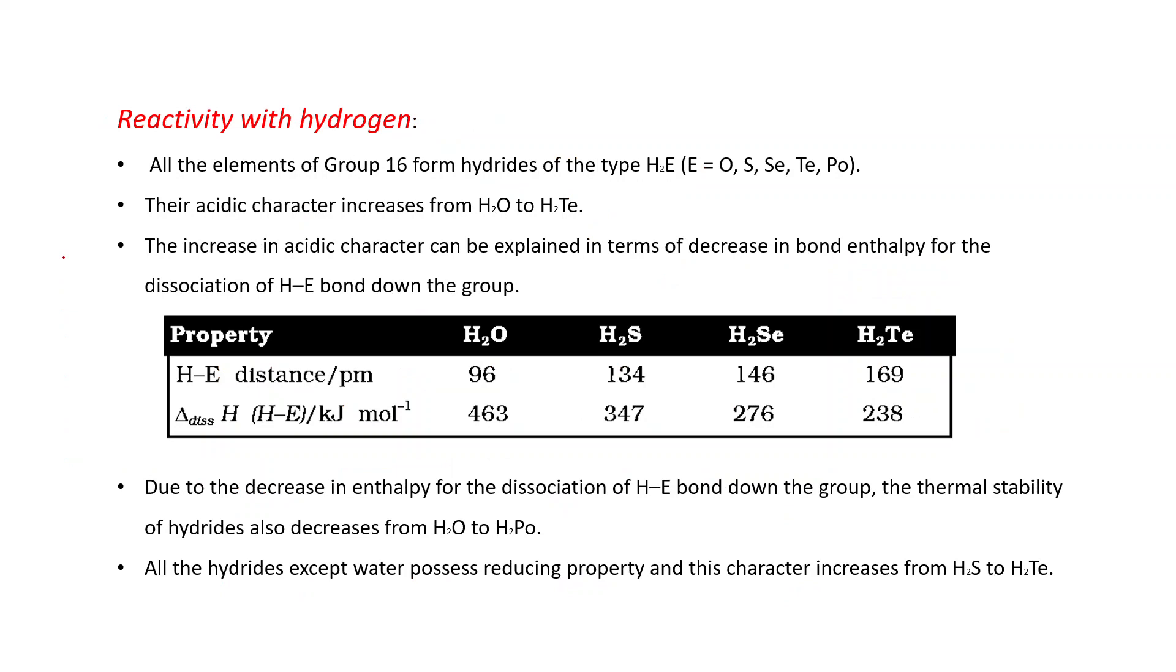We will discuss reactivity with hydrogen. All the elements of group 16 form hydrides of the type H2E, where E is the group 16 element. Acidic character increases from H2O to H2Te. The increase in acid character can be explained in terms of decrease in bond enthalpy for the dissociation of H-E bond down the group.